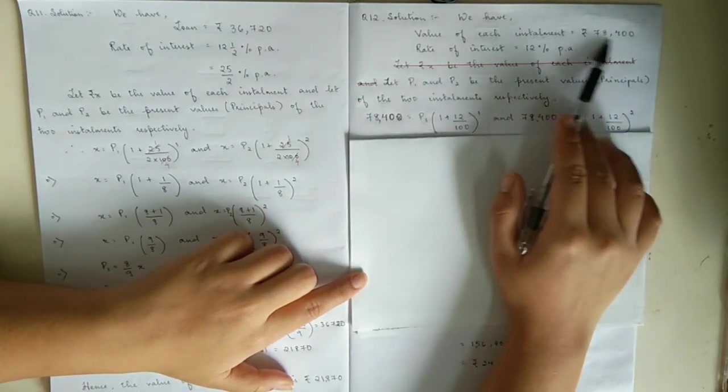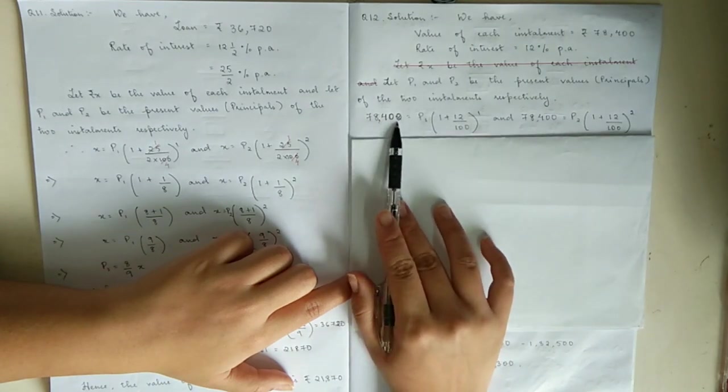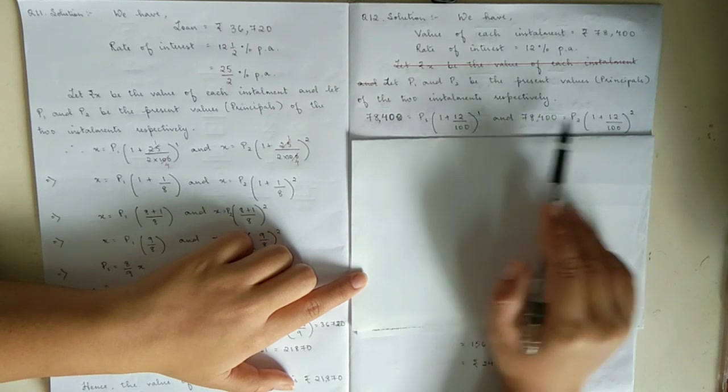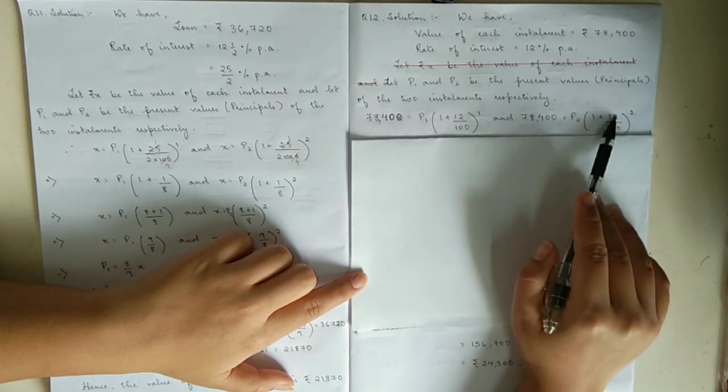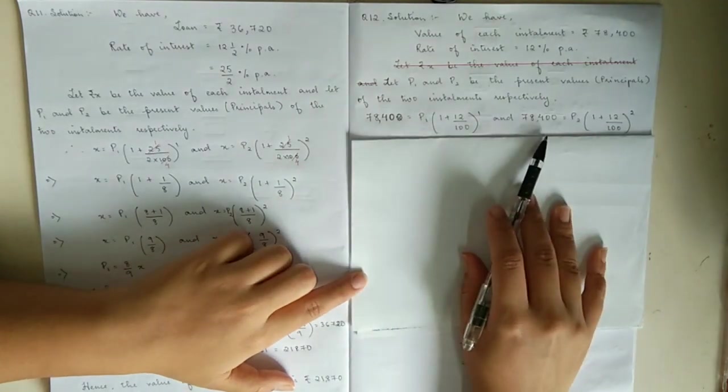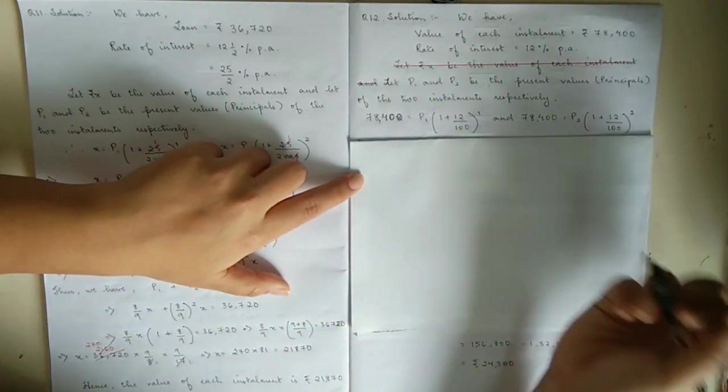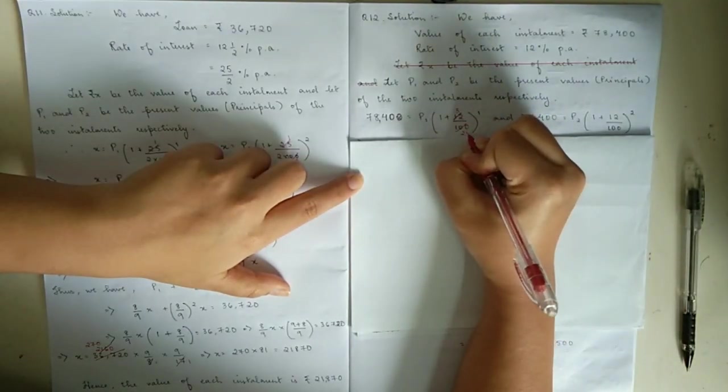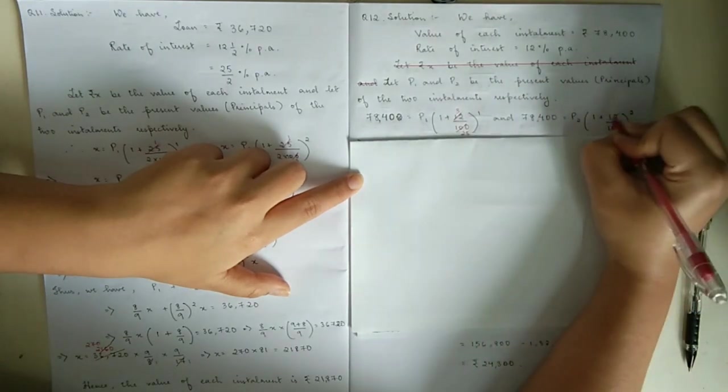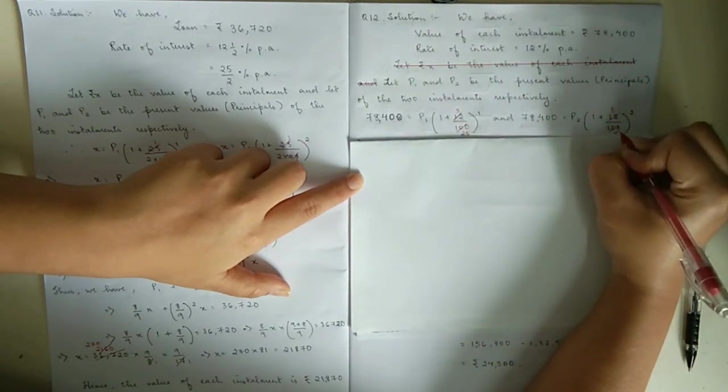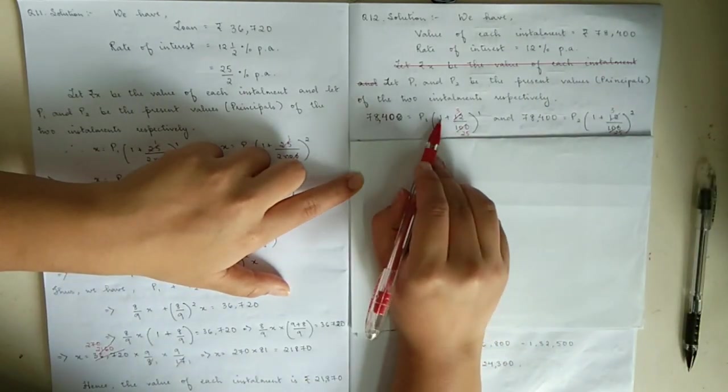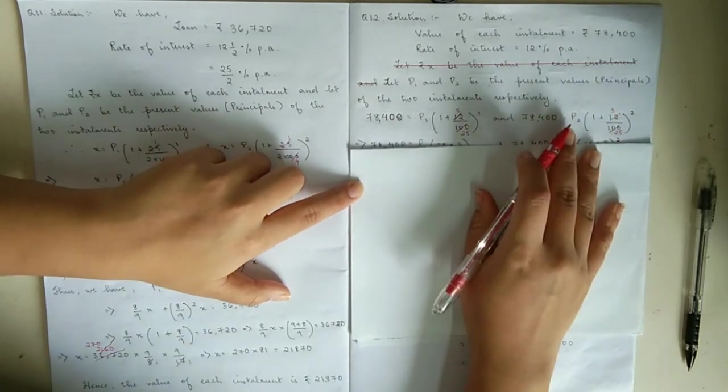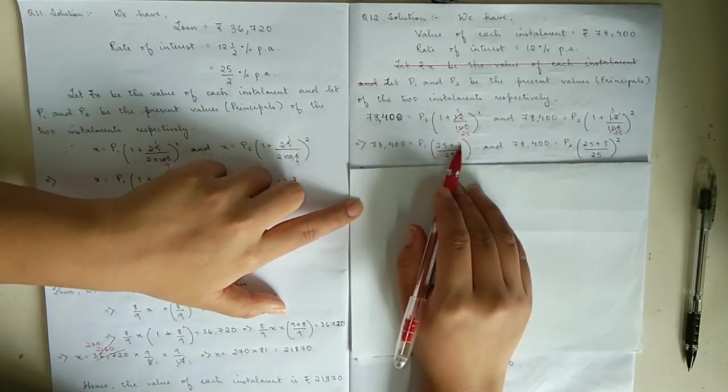x is the value of each installment, so it's 78,400. Using the formula, 78,400 equals p1 times 1 plus 12 by 100 to the power 1, plus p2 times 1 plus 12 by 100 to the power 2. 12 and 100 cancel - 4 times 3 is 12, 4 times 25 is 100. Find the LCM: 25 plus 3 by 25 for both, which is what you have in the next step.